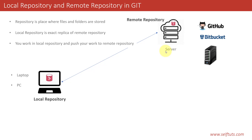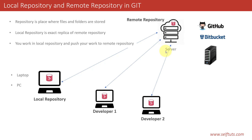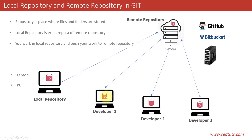When you work on a project in a company, you are not the only person working on it. Other people are also there working on it. There may be developer 1, developer 2, and developer 3, and they all are working on a single project. The local version of that project is present on each developer's system. Those local files and folders are known as local repositories, and there is a single remote repository.